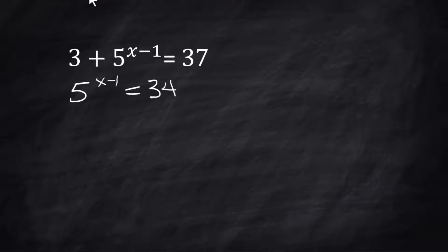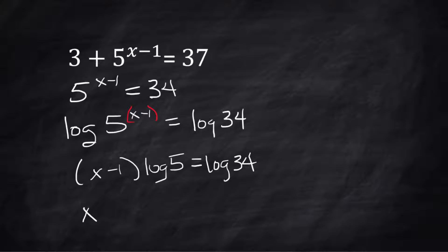Let's do regular log. log(5^(x-1)) = log(34). This allows us to bring this exponent down. So we get (x-1)·log(5) = log(34).